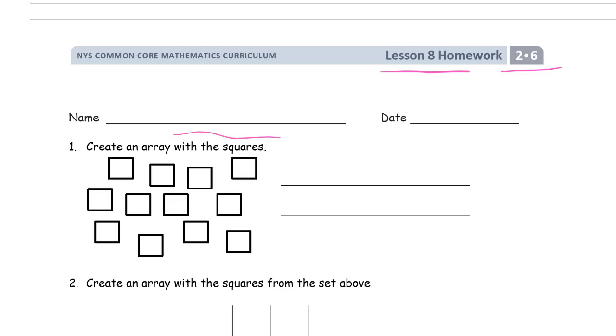It says create an array with the squares. So we're going to have 1, 2, 3 rows, right? Because the lines are separating the rows. 3 rows, so let's see, that means there's going to be 3 in each column.